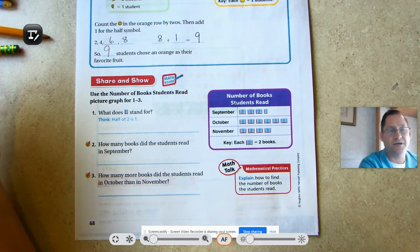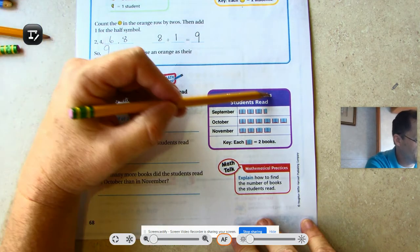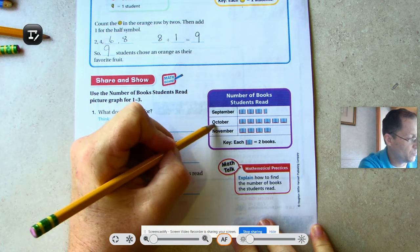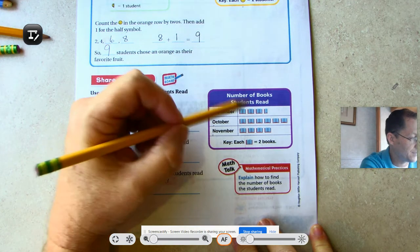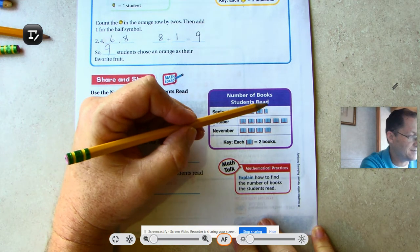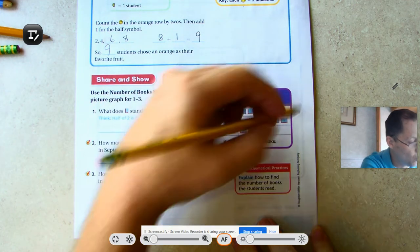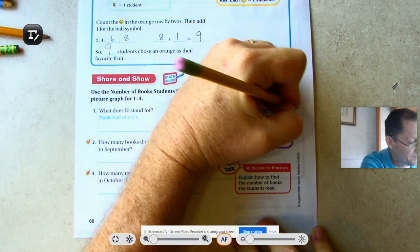Use the number of books students read picture graph. The number of books students read, and we have three months here: September, October, November. Each symbol is two books. So it's not 1, 2, 3, 4 books. It's 2, 4, 6, plus one. So seven books were read in September.